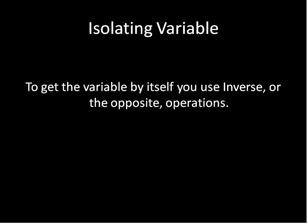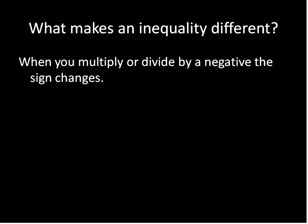To get the variable by itself, you use the inverse or the opposite operation. Now, what makes an inequality different? The only thing that makes solving an inequality different from solving an equation is that when you multiply or divide by a negative number, the inequality sign will change, and I'll show you why that is.